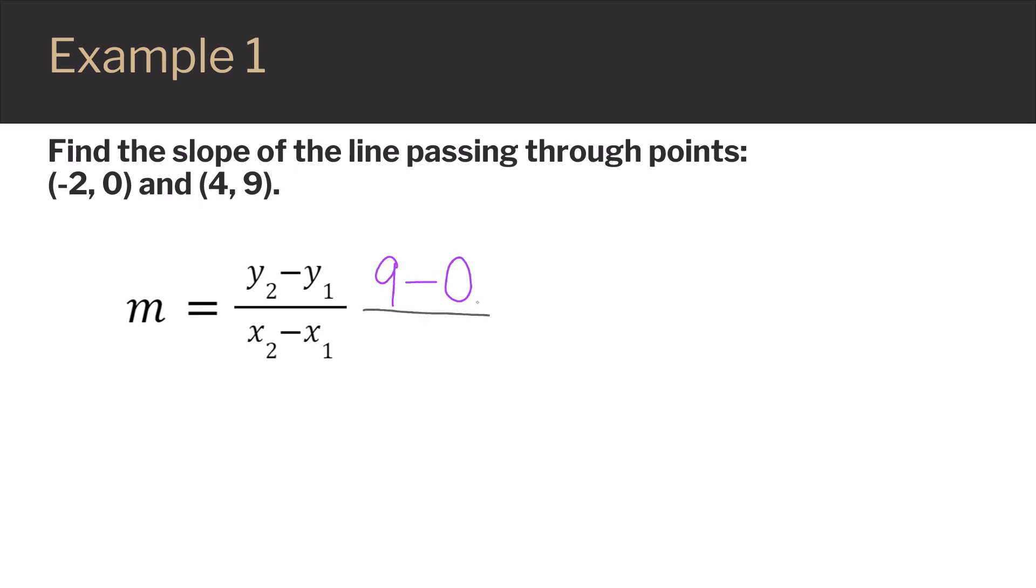whatever y-value you start with, you have to also start with its corresponding x-value when you get to the denominator. So I would start with 4 minus the other x-value, which in this case is negative 2.